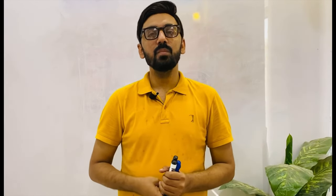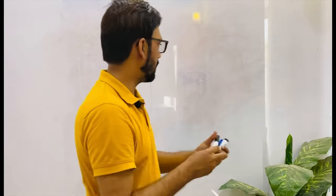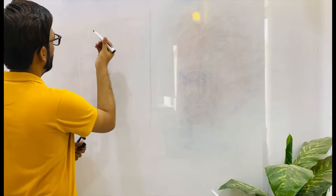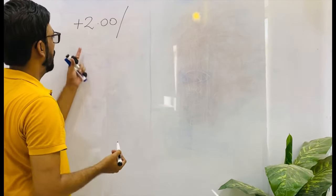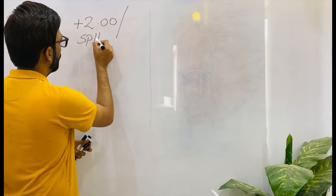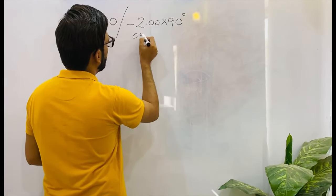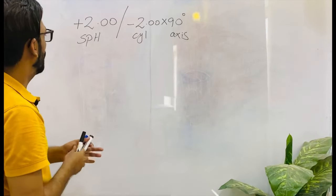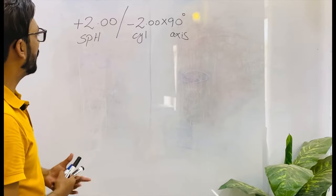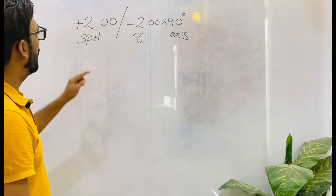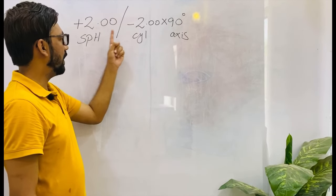We will learn about those prescriptions which we have to transpose. For example, let's start with the first prescription: we have plus two spherical and minus two cylinder at 90 degrees. So we have plus two spherical, minus two cylinder, and the axis is 90 degrees. Now let's analyze this prescription carefully — the power of the sphere and the cylinder are the same: two sphere and two cylinder.